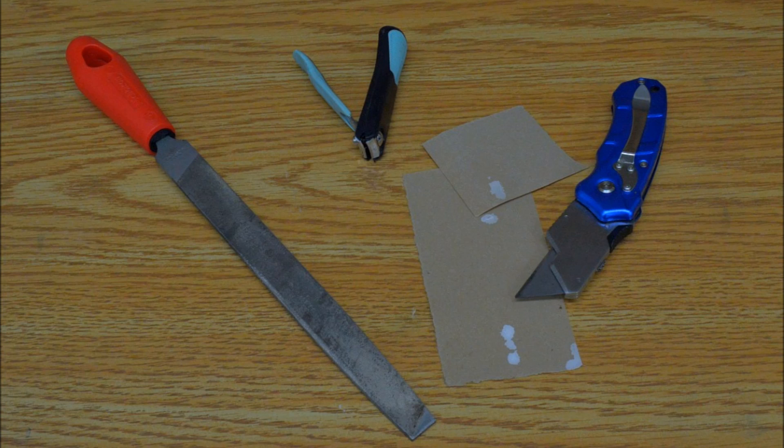The best method for scarification depends on the size of the seed. A file works great for large seed, a knife and nail clipper works for medium-sized seed, and sandpaper is the best method for very small seed. Let's have a look at all of these methods.